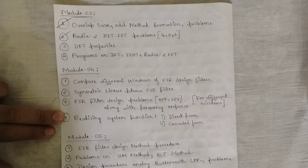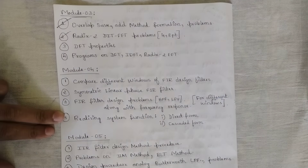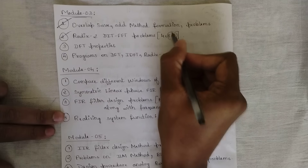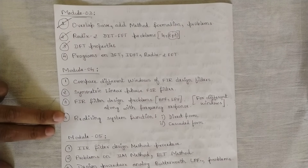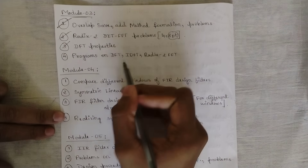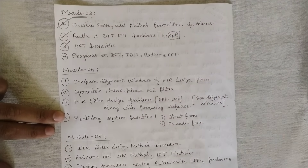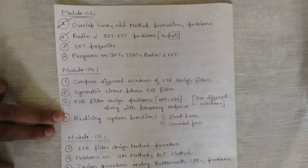Next is a confirmed question: radix-2 DIT FFT problems — butterfly structure problems. There are high chances they will ask eight-point DIT FFT structure problems; they likely won't ask four-point. Focus on eight-point for sure. Also, some DFT properties from module three should be known. Again, one program from module three is confirmed — related to DFT, IDFT, or radix-2 FFT. They will give you a sequence and you should build a program to develop the radix-2 FFT algorithm. DFT/IDFT programs are less likely, but radix-2 FFT program is definite.